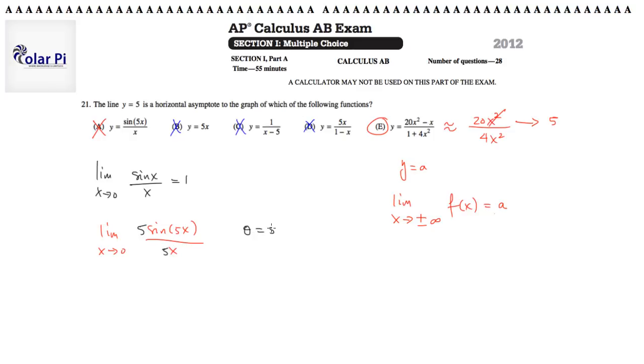And now I can make the substitution, for instance, theta equals 5x. And what I've got is the limit as x goes to 0 means theta goes to 0 also. So, the limit as theta goes to 0 of 5 times sine of theta over theta. And I could use this